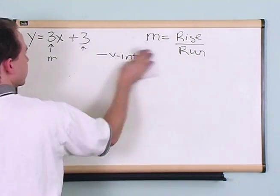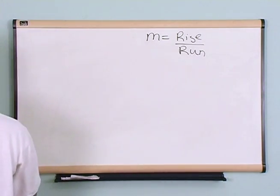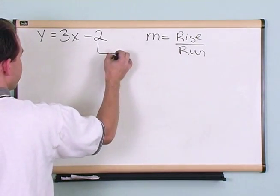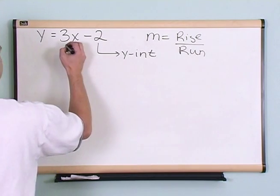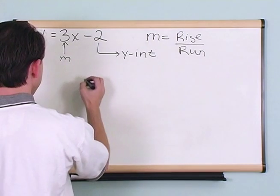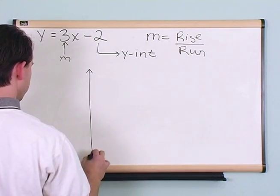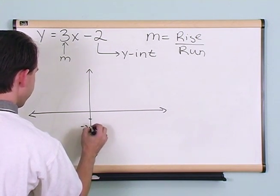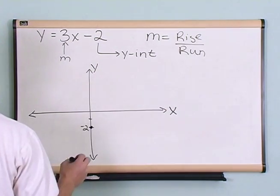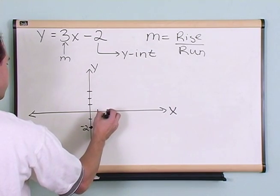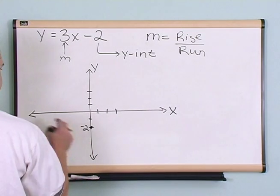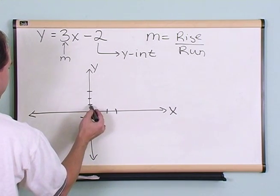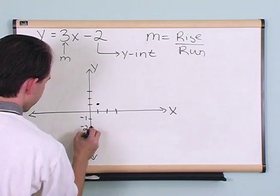Let's do more examples, because that's how you learn. Let's say we have y equals 3x minus 2. The y-intercept is negative 2 — that's where the line crosses the y-axis. The slope is 3. So I start at negative 2 on the y-axis, go up 3 units, over 1 unit to the right, put a dot there, and now I've got two points. That's my line.